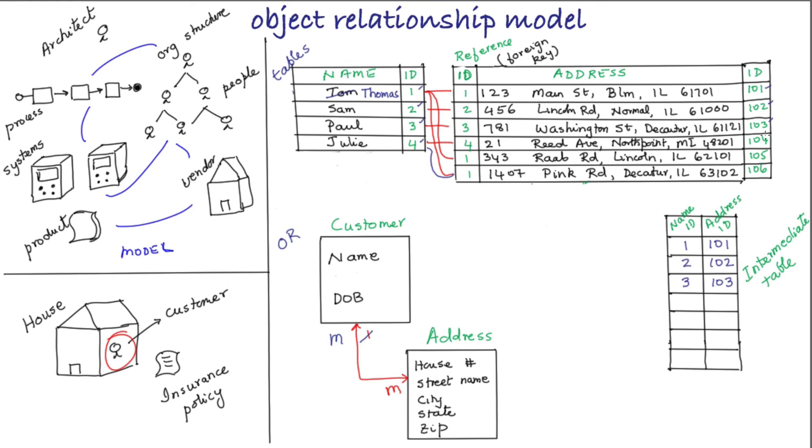To do this with tables, you'll have to create an intermediate table that contains the map of the corresponding IDs from the customer table and from the address table. In OR space, this is represented as a many-to-many relationship. You can see how the OR space representation elegantly maps to a relational space representation.